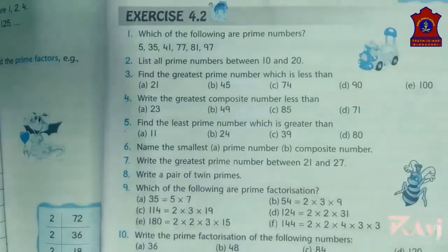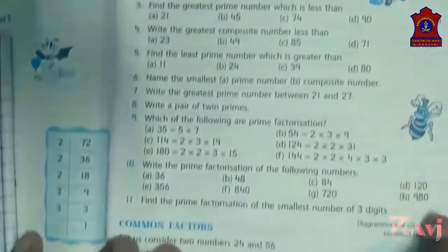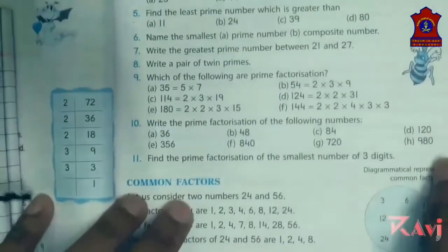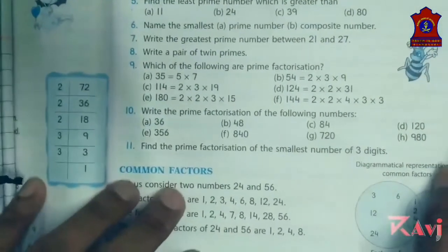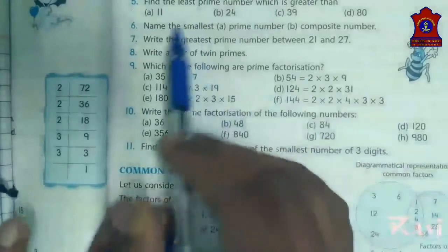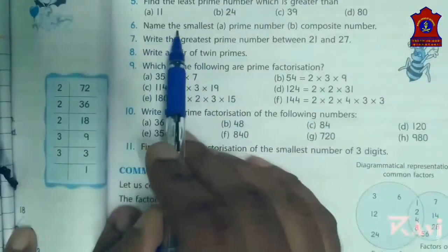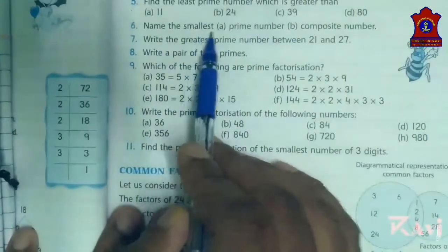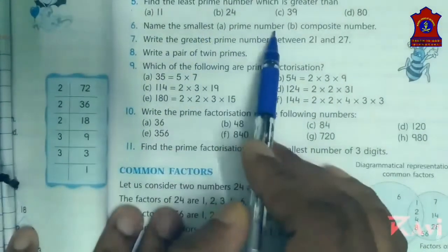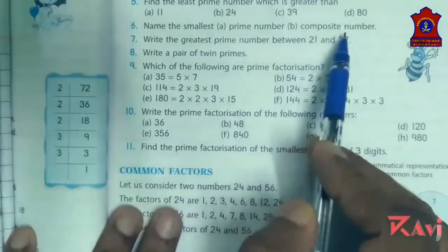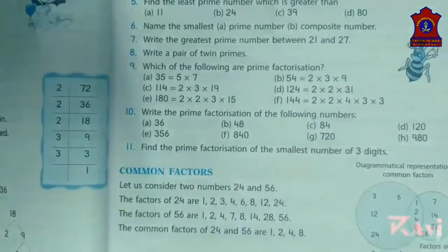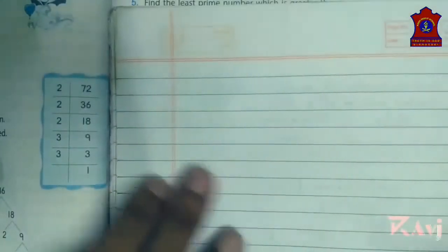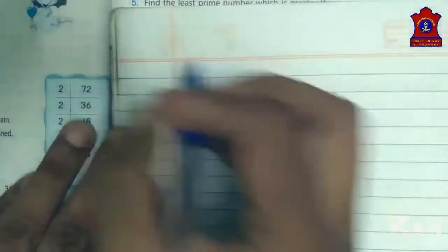Look at question number 6. Name the smallest prime number and composite number. So here we are going to find the smallest prime number and the smallest composite number.